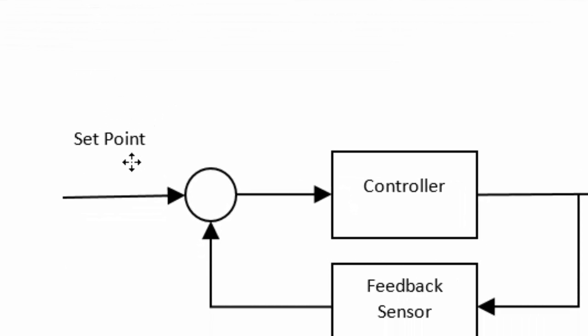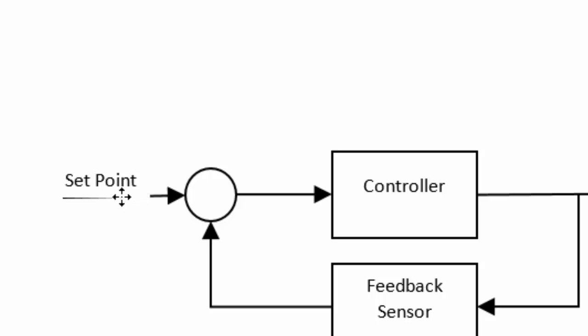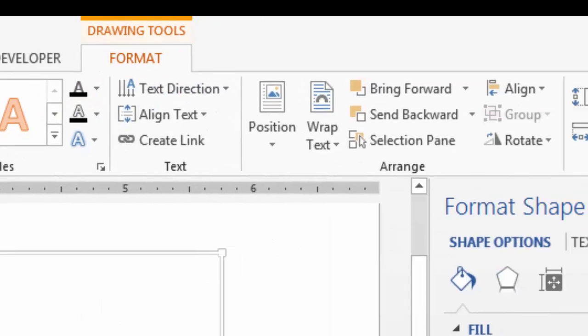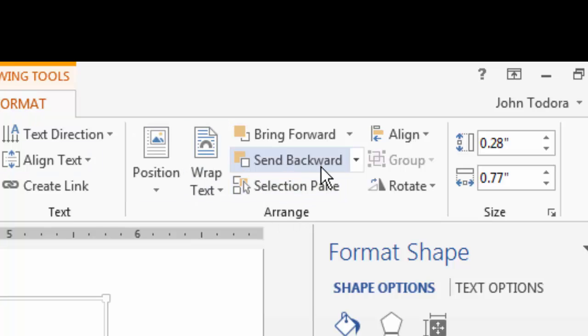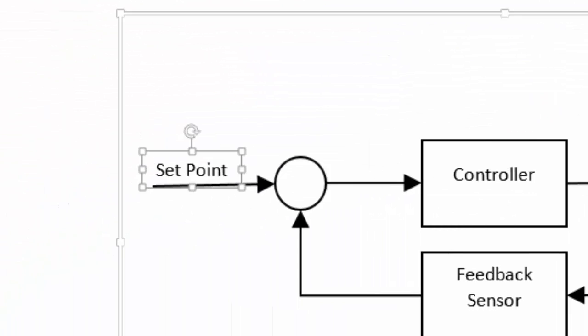Now I'll drag the text box down so it sits on top of the arrow. Notice that when I place it there, the arrow disappears — the text box is covering it. To fix this, I can send the text box behind the arrow. On the Format tab in the Arrange group, I'll select Send Backward and choose Send Back. When I deselect, you can see that 'Set Point' now has no frame and you can see the arrow.